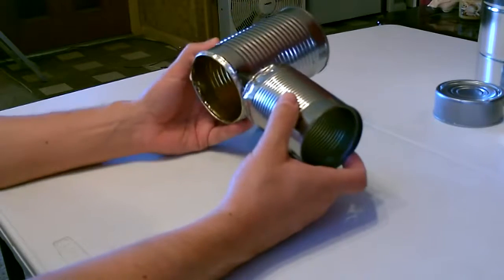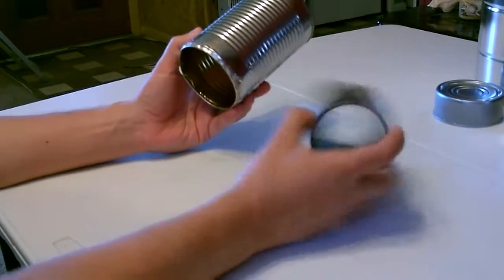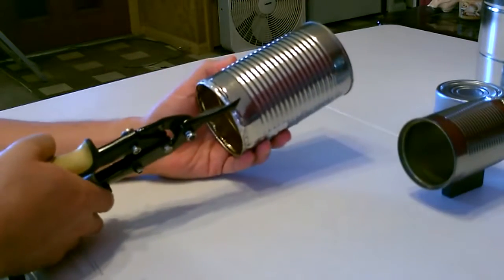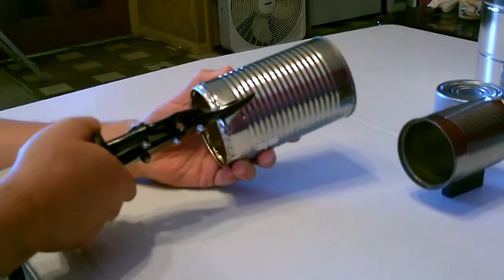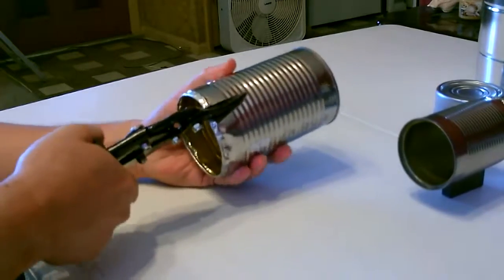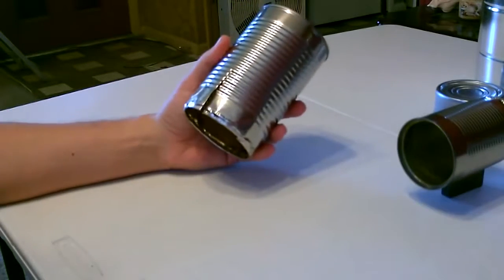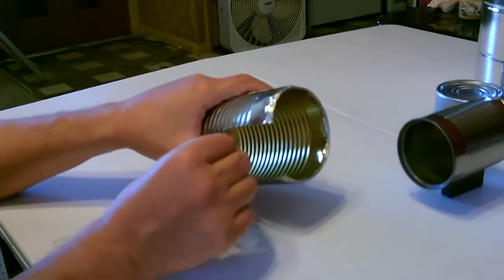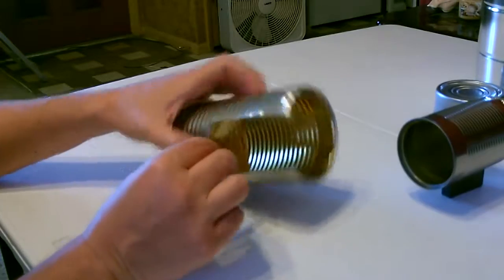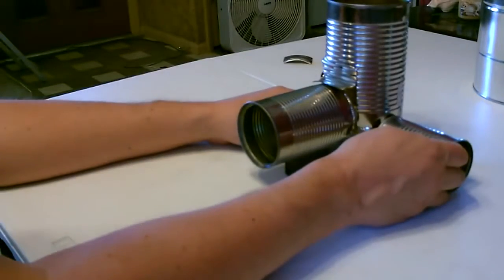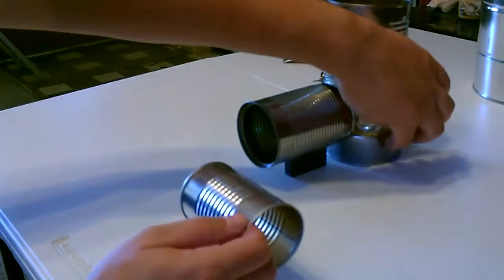All right so I'm going to start by cutting this can. Now I'm going to go ahead and cut the hole in the side for the air inlet in the tuna can.